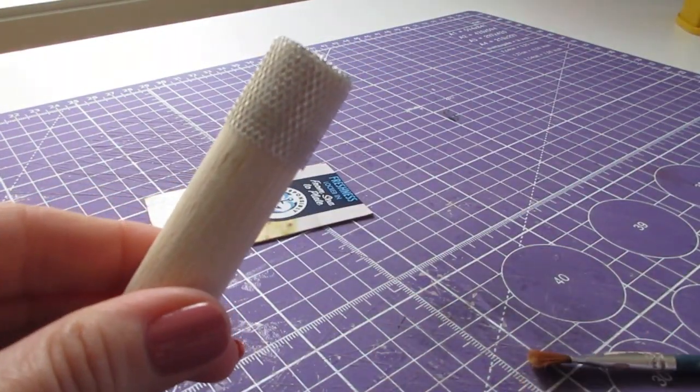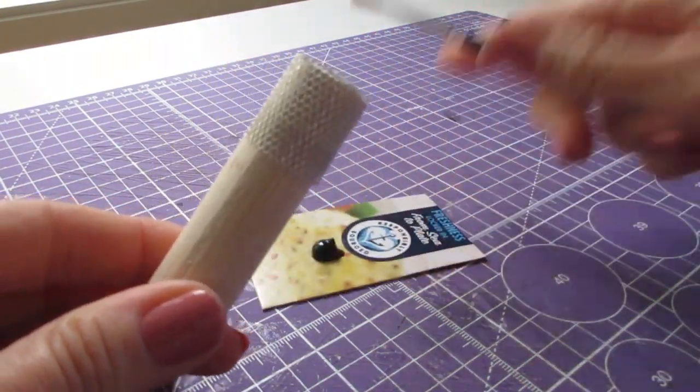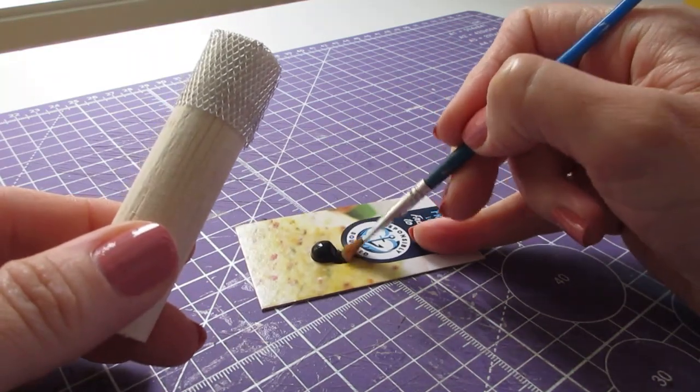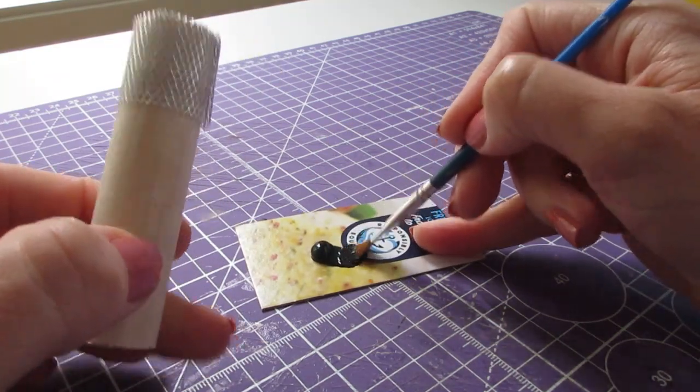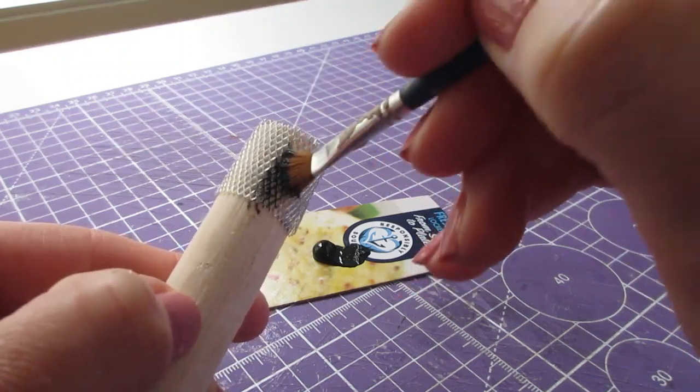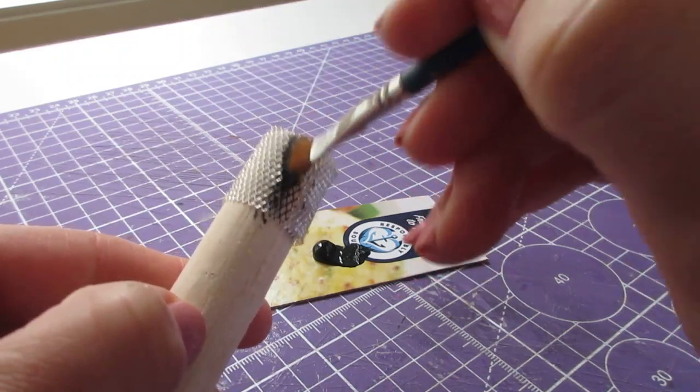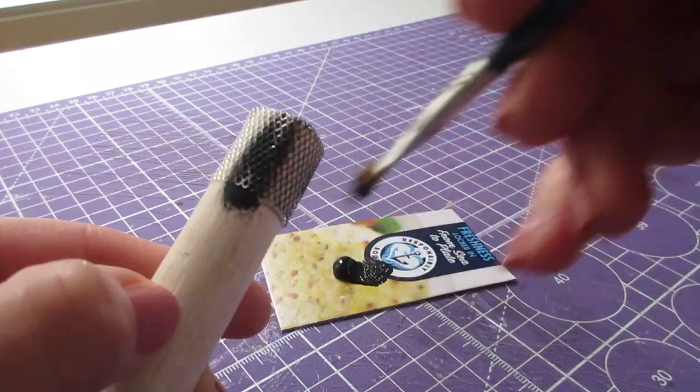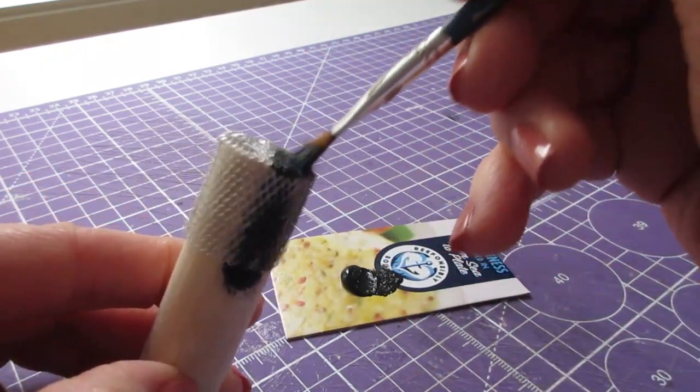To paint your waste paper basket you can leave it on the piece of dowel and actually dab the paint on so that you're getting it into all of the little gaps. Don't forget to do the bottom of the bin as well.